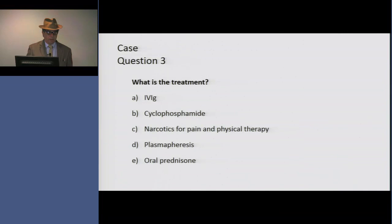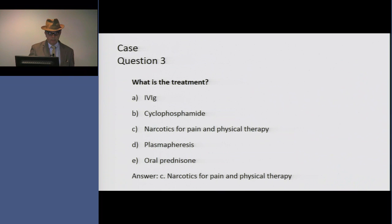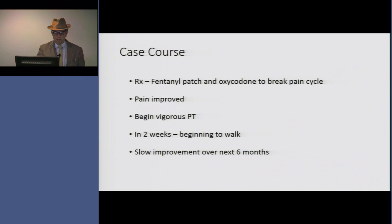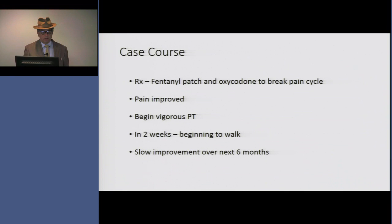Given the diagnosis of diabetic lumbosacral radiculoplexopathy, what's the best treatment — immunomodulating agents or something else? I believe the answer is to break the pain cycle: give narcotics and aggressive physical therapy. This patient got a fentanyl patch for long-term pain relief and oxycodone for short-term pain relief. We broke the pain cycle, her pain began to improve, we did vigorous physical therapy, and over two weeks she began to walk, with slow improvement over six months.